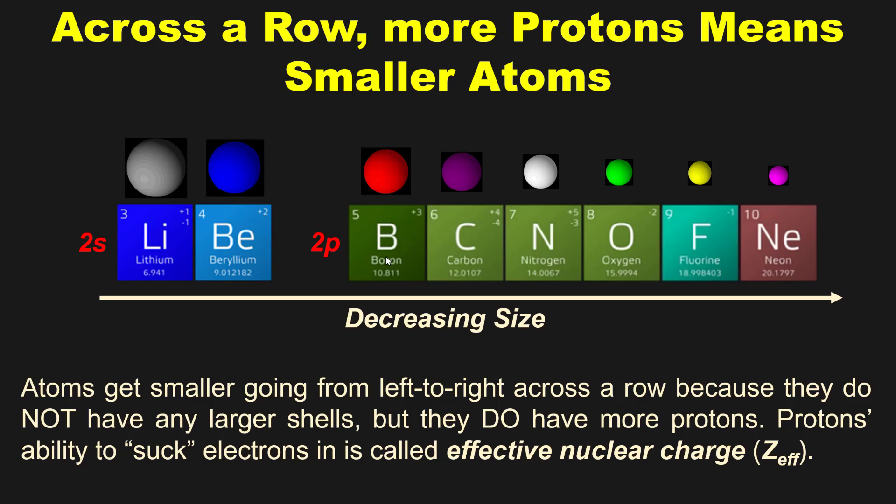Hence, more protons equals smaller, not bigger. And that explains the trend as you go left to right across a row.